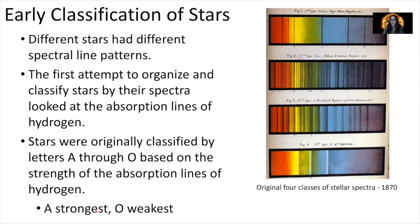Here we have the original four classes of stellar spectra dating back to the 1870s. We've got Sirius, the brightest star in our night sky — this is the spectra we get from that star, with only very few absorption features. And then here's our Sun with lots of absorption features. And here are the absorption features of a couple of other stars as well.